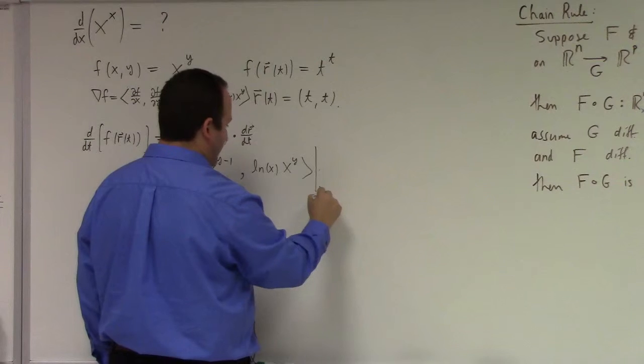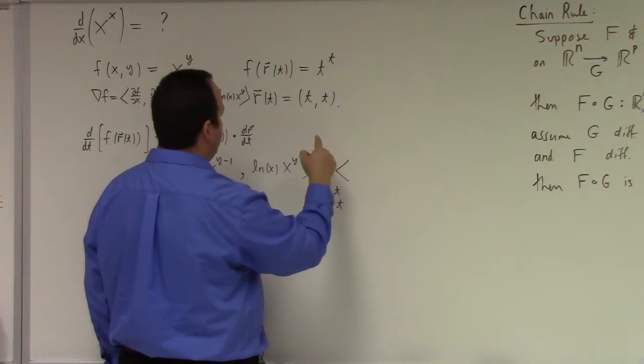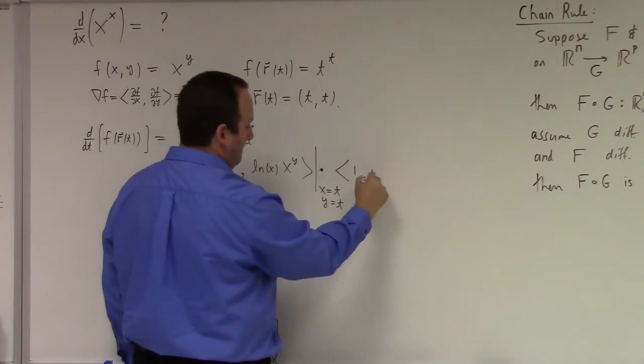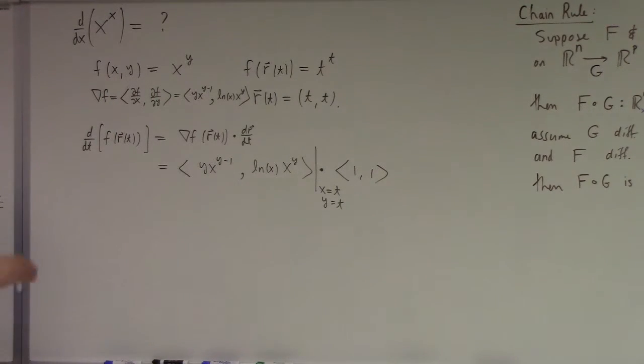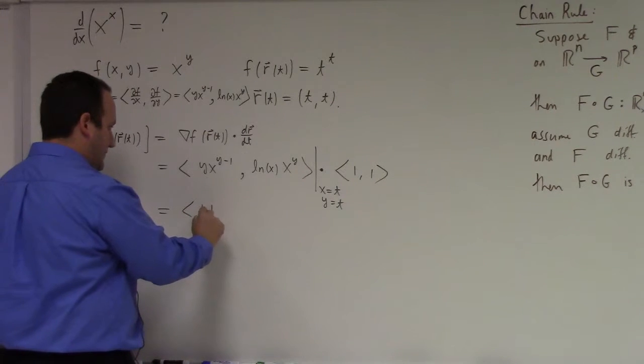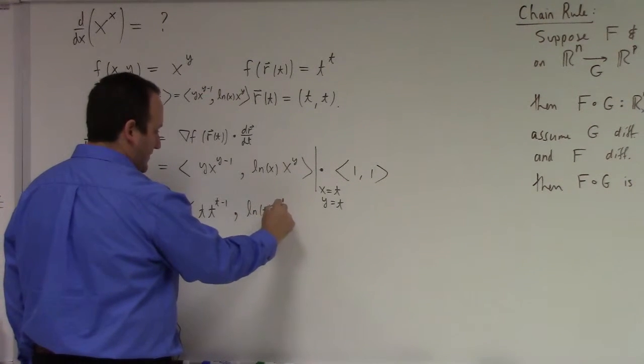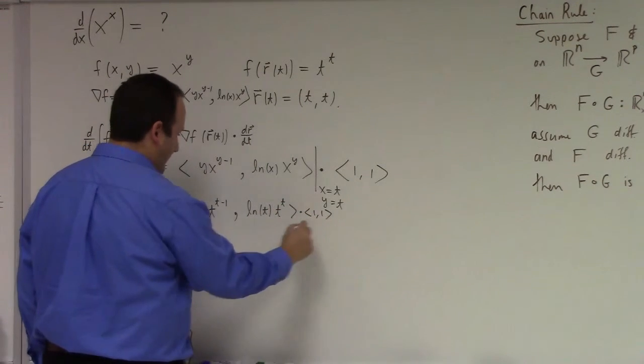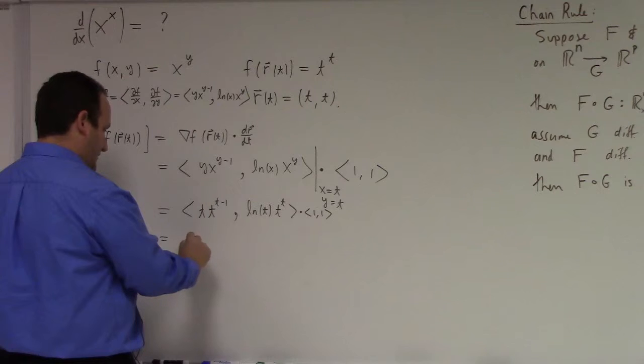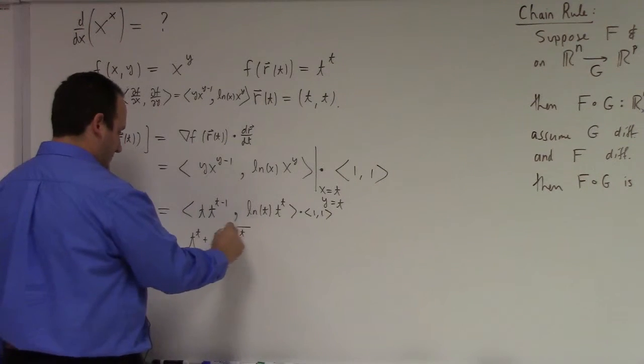And, of course, all of that's evaluated at x equals t, y equals t, right? And you're taking the dot product with the derivative dr/dt, which is just (1, 1), right? So I have to evaluate that first vector at that inside function, which gives me what? t*t^(t-1), natural log of t, t to the t dot (1, 1), which gives me what? t to the t plus ln(t) times t to the t. And there you have it.